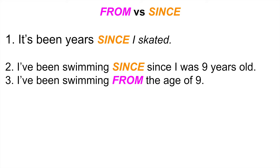More examples: 'It's been years since I skated' — I show you that I haven't been doing that for some time, like for years, measuring not only the starting point but the duration. 'I've been swimming since I was nine years old' — I indicate the starting point at age nine up to this moment, meaning I started doing that when I was nine and I'm still doing it. Compare: 'I have been swimming from the age of nine' — here I indicate only the starting point.